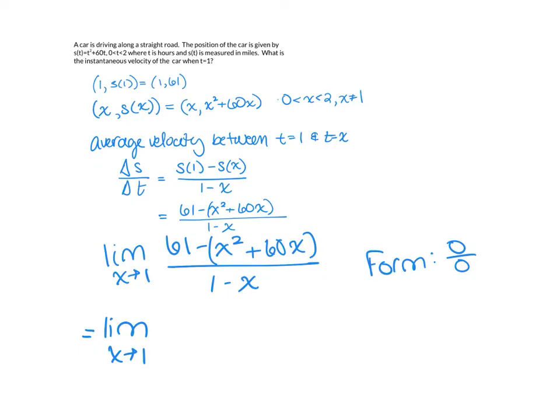So if we factor the top here, first we'll pull out a minus 1, and we'll have x squared minus, plus 60x, because we have a minus that we're pulling out, minus 61, divided by, let's pull a minus 1 out of the bottom too, so x minus 1, now those minus 1's will cancel,